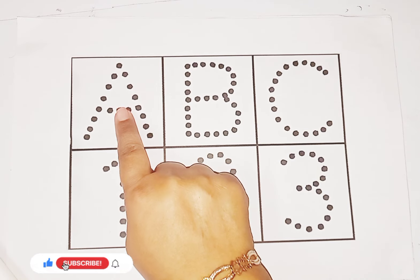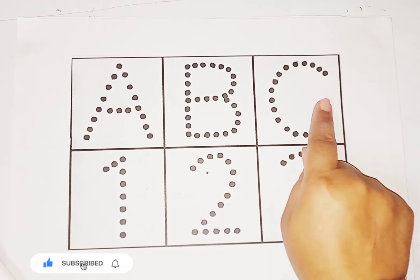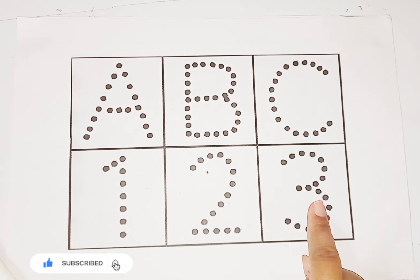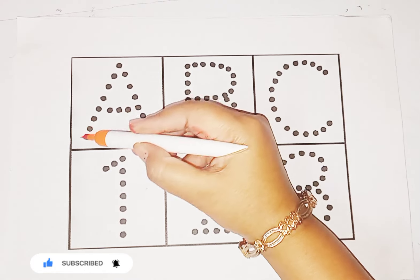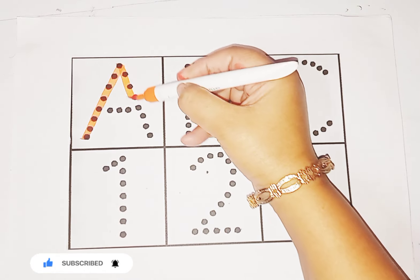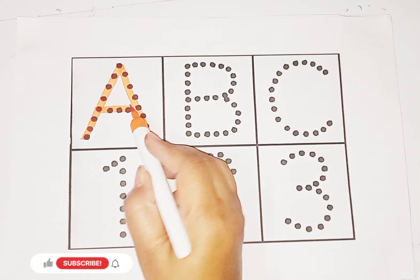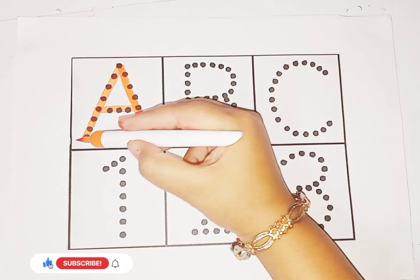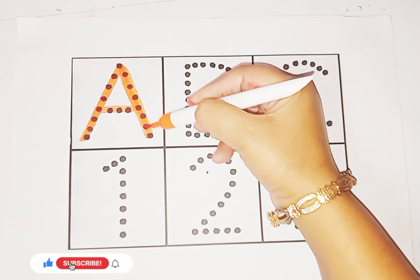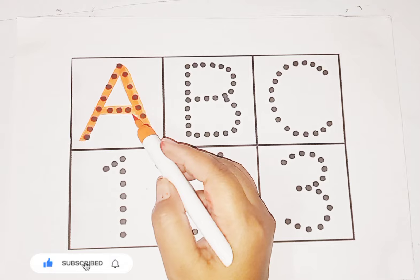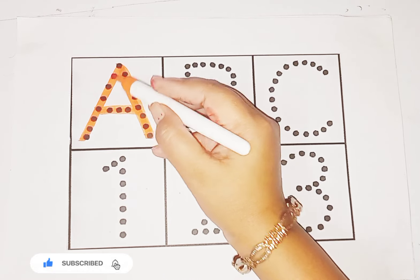So kids, today we learn alphabets A, B, C and number 1, 2, 3. Let's start with the orange color. Letter A. Letter A. A for Apple. Sound is A. Apple.